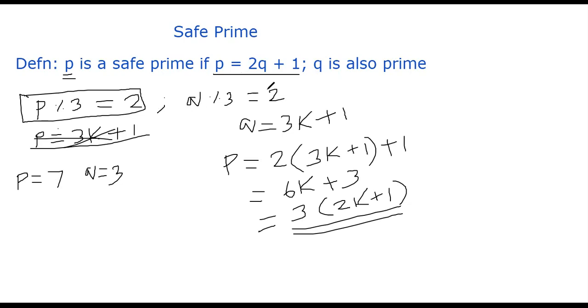So why am I saying this? What is the purpose of talking about p mod 3 being 2 and the q mod 3 being 2? It helps us to speed up the algorithm, right? Because we first generate a q, and check whether q mod 3 is 2.